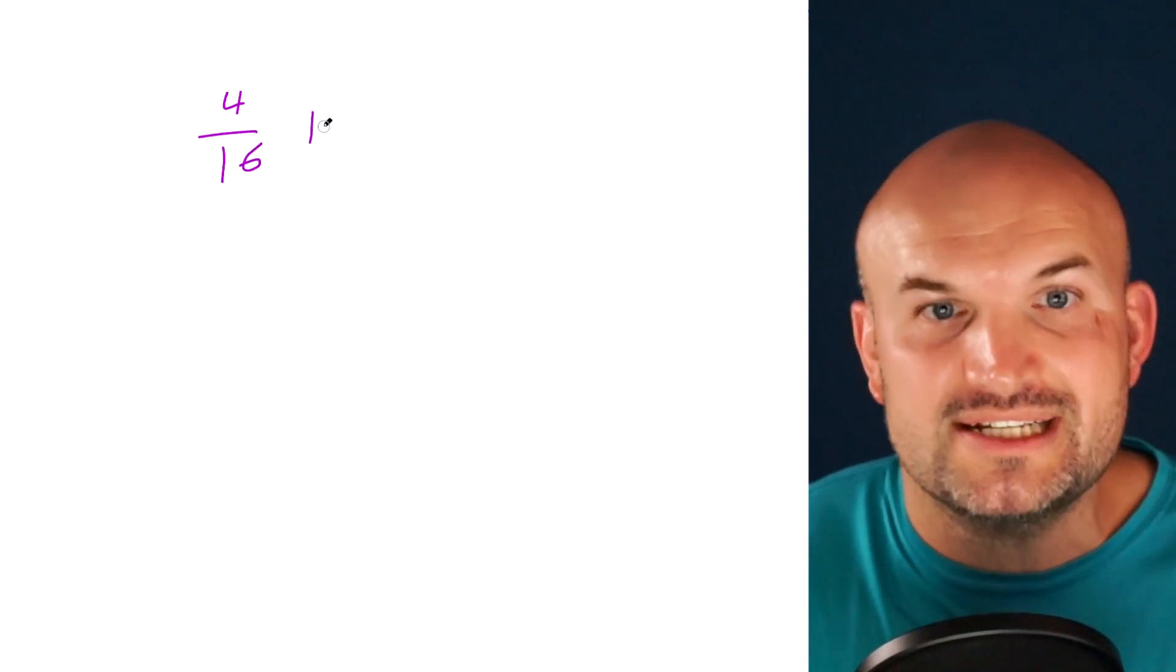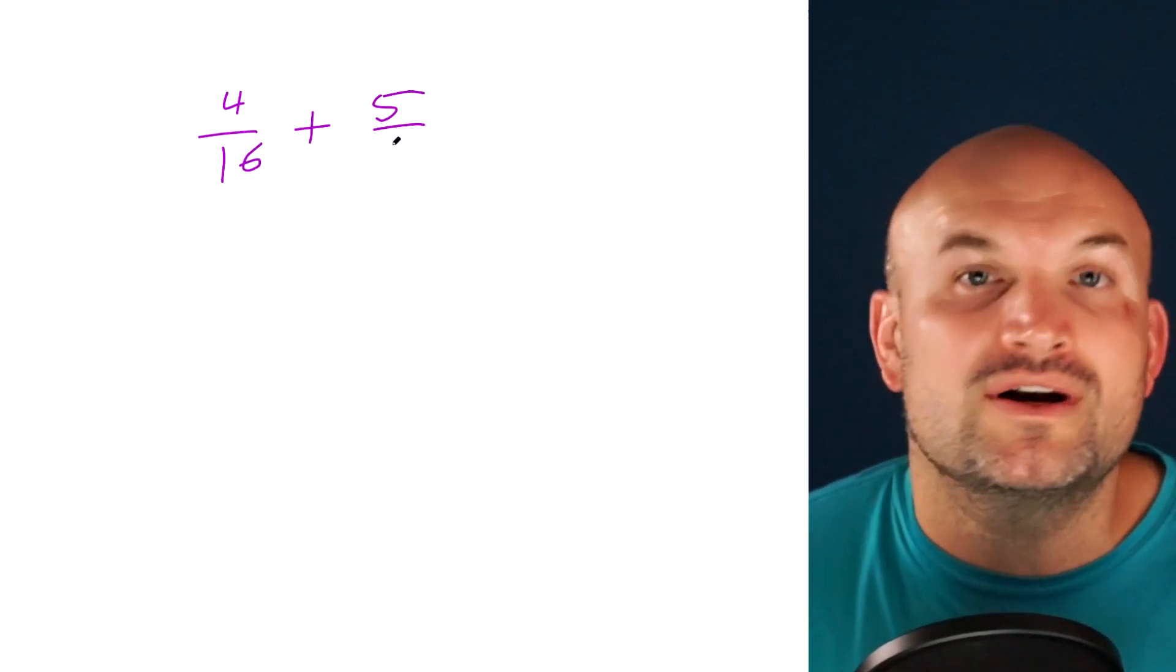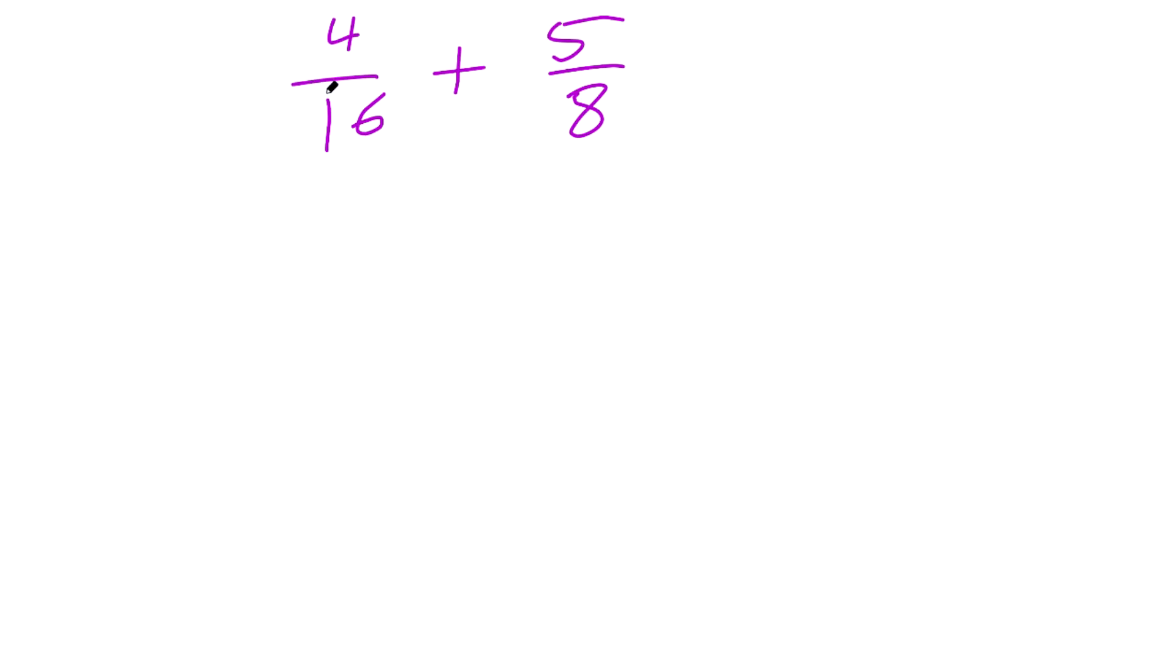So what I want to do is show you the difference if you were to simplify first or if you were simplified at the end when dealing with adding and subtracting. In this first example, I have a fraction of 4/16 plus 5/8. Now it'd be very simple, we can just reduce the 4/16, dividing by 4 in the numerator and denominator. And that's going to produce a fraction of 1/4. And if I had to add that to 5/8, I would need to get a common denominator of 8. So I'd multiply the left-hand fraction by 2/2, and that's going to give me 2/8 plus 5/8, which is 7/8 in its reduced form.